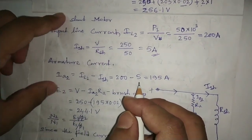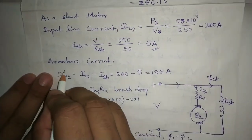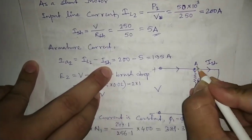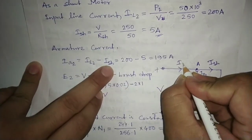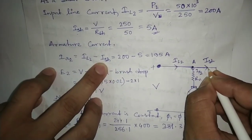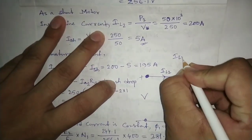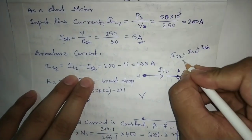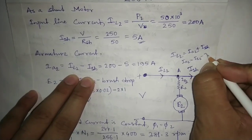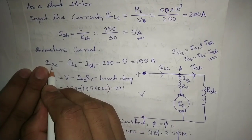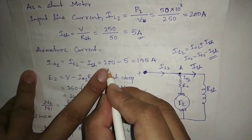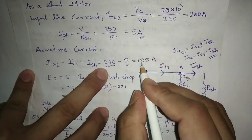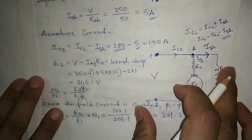The field current for the DC shunt motor is 5 ampere. For armature current, applying KCL at the motor node: IL2 equals IA2 plus Ish, so IA2 equals IL2 minus Ish. IL2 is 200 ampere and Ish is 5 ampere, so the motor armature current IA2 equals 195 ampere.